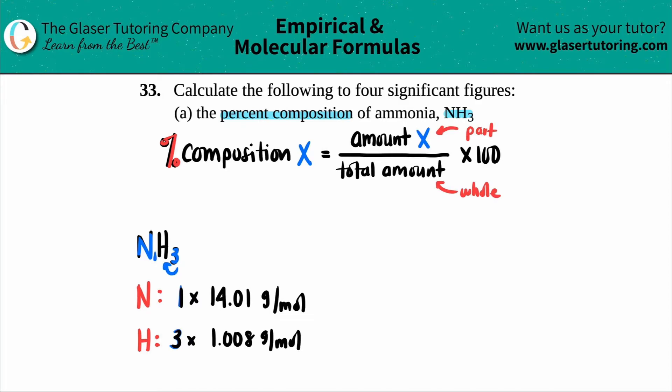All we have to do is multiply the numbers. So 1 times 14.01 is 14.01. And then for the bottom number, 3 times 1.008, I believe is 3.024. We could always do the calculator just in case, 3 times 1.008. Yep. There we go. And we have grams per mole and grams per mole.